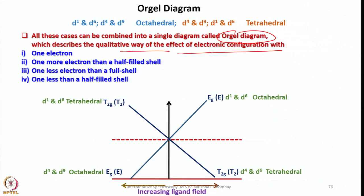A typical Orgel diagram for all these systems together represents D⁴ and D⁹ octahedral on one side, and D¹ and D⁶ tetrahedral on the other side; again D⁴, D⁹ tetrahedral and D¹, D⁶ octahedral. For example, in a D⁴ system with one transition, it goes from Eg to T₂g; D⁹ also has Eg to T₂g. For D¹ and D⁶, it is T₂g to Eg. This single diagram can explain electronic spectra for complexes with these electronic configurations without any problem.